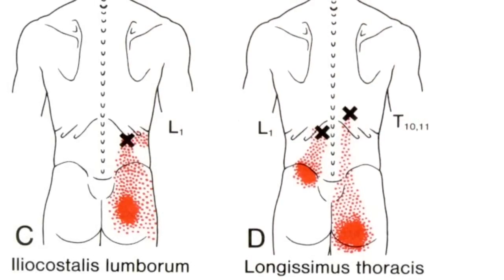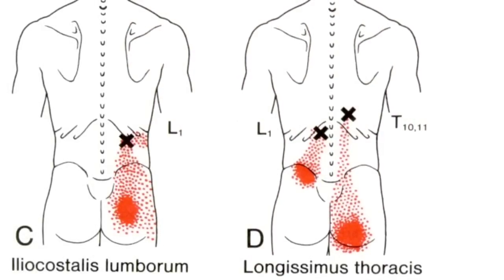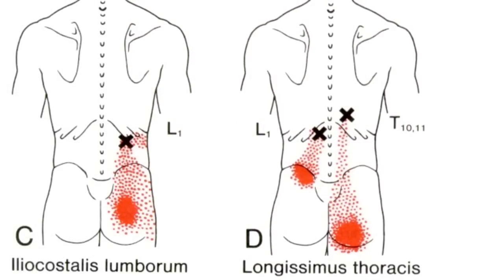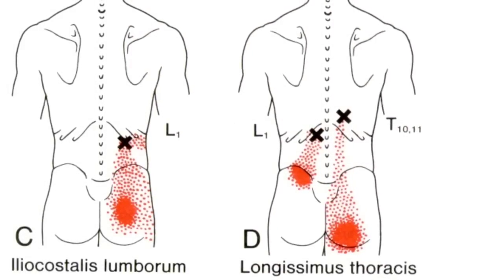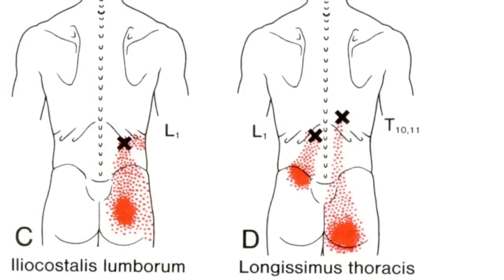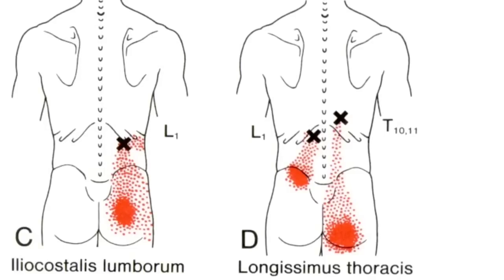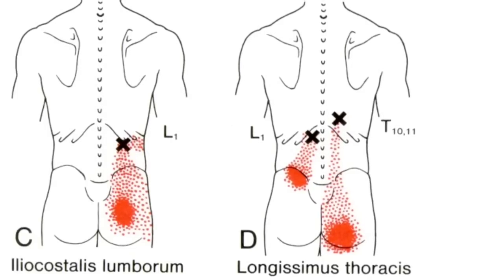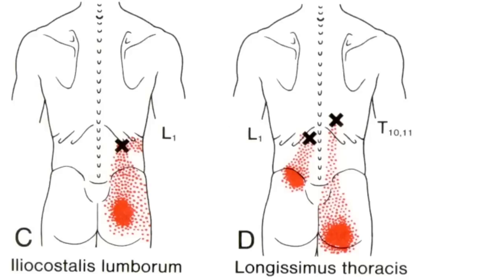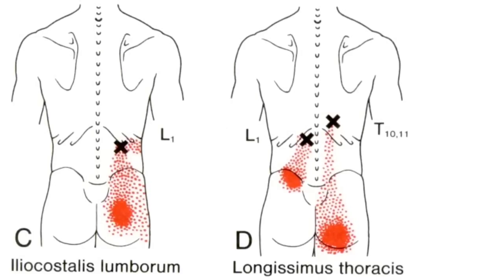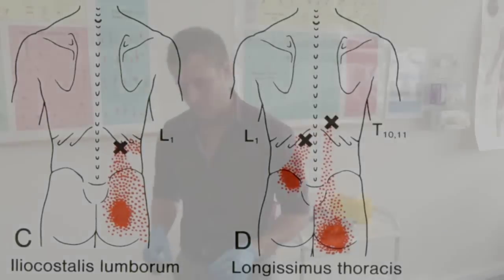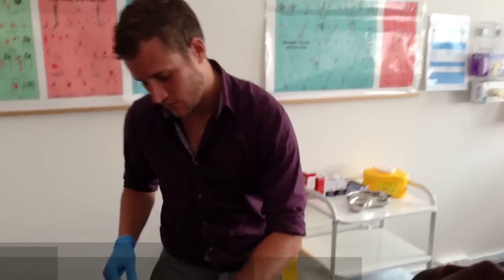Active trigger points commonly refer locally through the lumbar area and into the inferior gluteal region. Occasionally, trigger points from the lower erector spinae are known to refer down the course of the sciatic nerve.